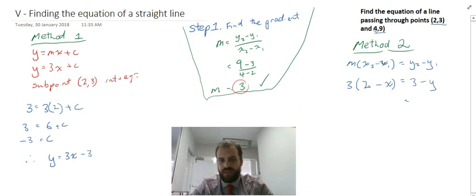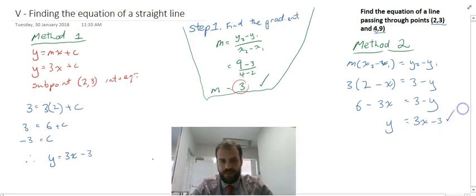So now I have 3 times 2 minus x equals 3 minus y. I can expand this: 6 minus 3x equals 3 minus y. I can rearrange this, move the negative y to this side to be positive y. The negative 3x becomes positive 3x. The 6 here will become negative 6, so 3 minus 6 is minus 3.